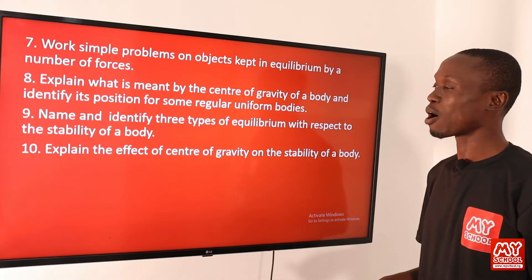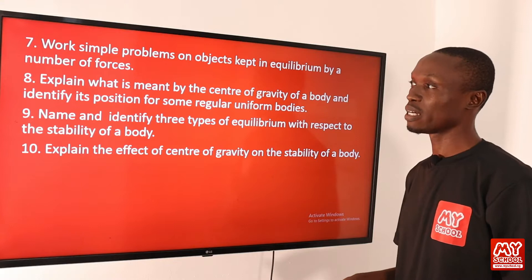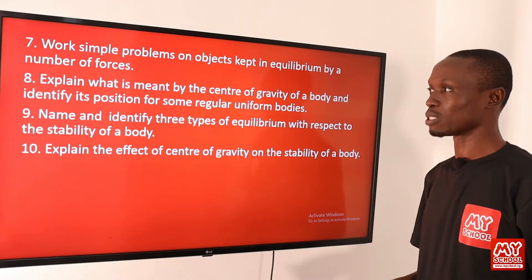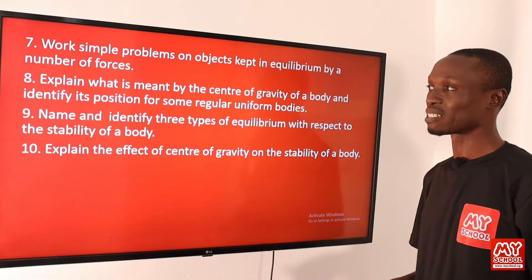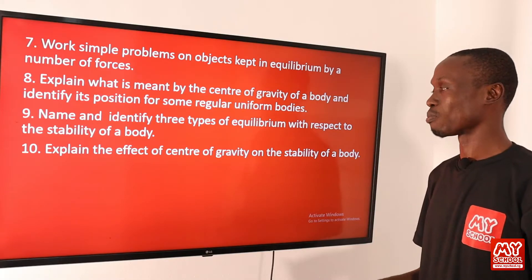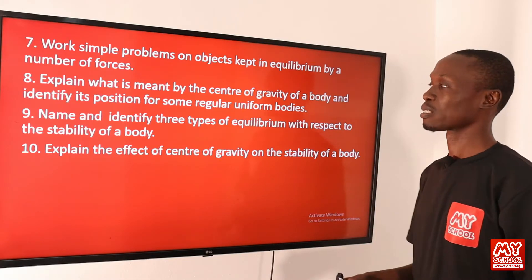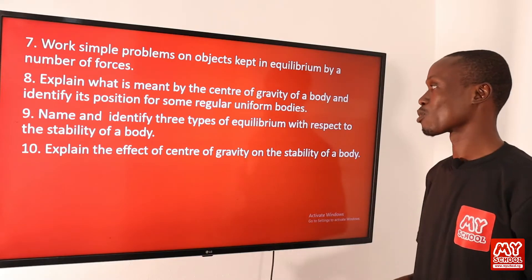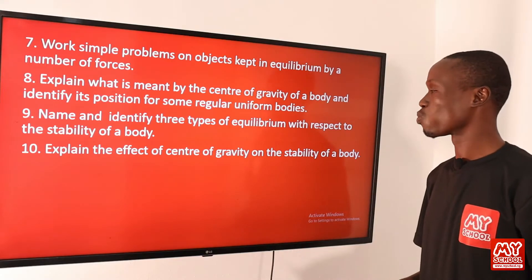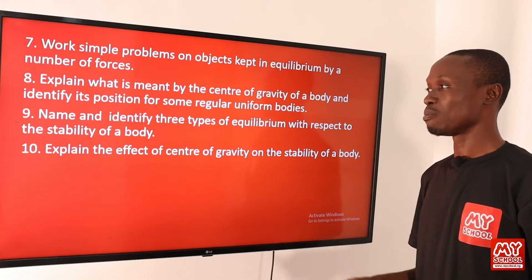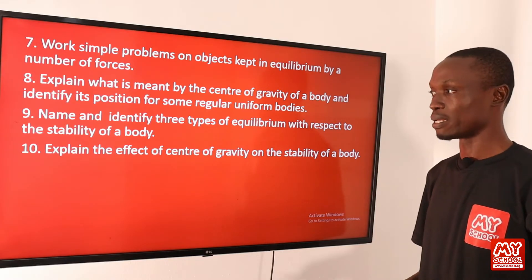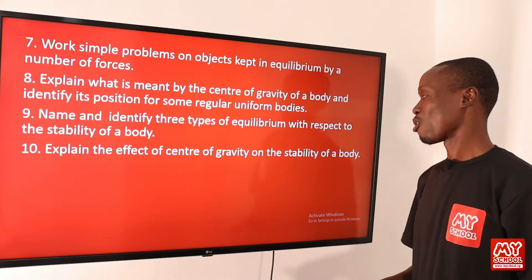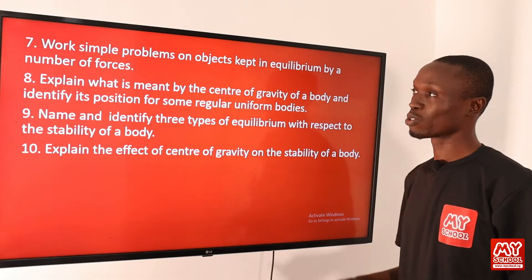Seven, work simple problems on objects kept in equilibrium by a number of forces. Eight, explain what is meant by the center of gravity of a body and identify its position for some regular uniform bodies. Nine, name and identify three types of equilibrium with respect to the stability of a body. Ten, explain the effect of center of gravity on the stability of a body.